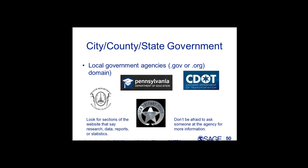Local government agencies — those with a .gov and sometimes a .org domain — often provide data or publish statistics. Some of these agencies are health departments, education departments, school districts, local housing agencies, local transportation agencies, and your police department and other public safety agencies. Explore your local government's list of agencies and see what you might be able to find. Look for pages on those sites that say data, statistics, research, projects, or reports. And as Haley mentioned, never be afraid to pick up a phone or send an email to ask for more information — most agencies do list contacts.